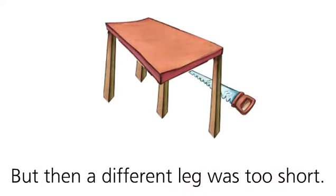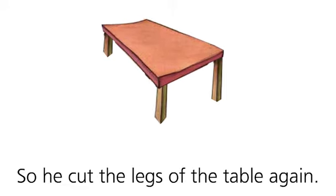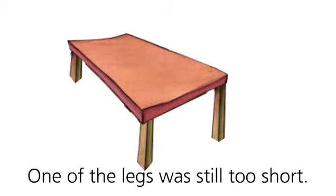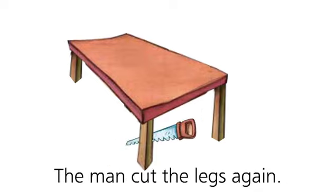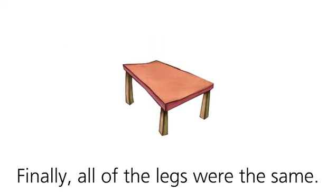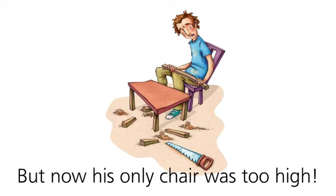But then a different leg was too short. So he cut the legs of the table again. One of the legs was still too short. The man cut the legs again. Finally, all of the legs were the same. But now his only chair was too high.